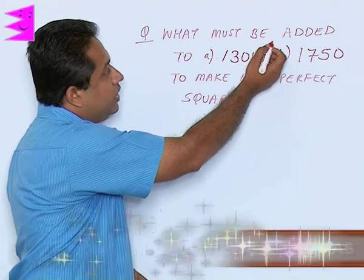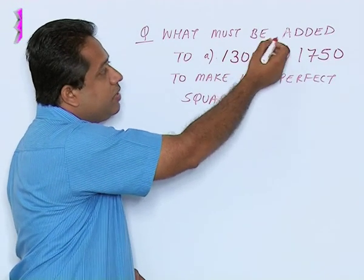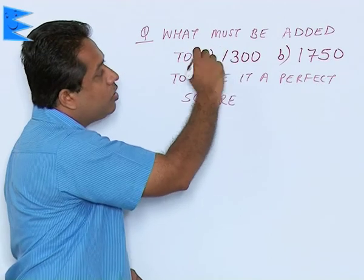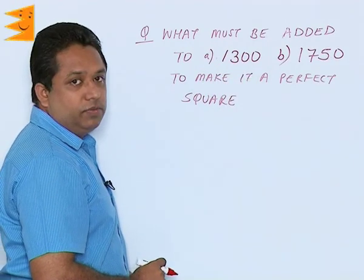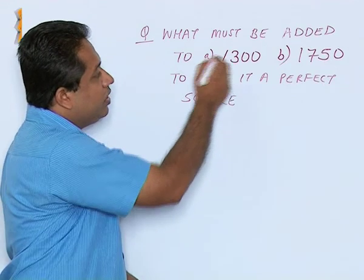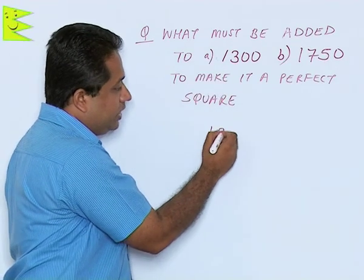As discussed earlier, if the question is what must be added or what must be subtracted, then we are going to use the long division method. So in the long division method we are going to take the number 1300.